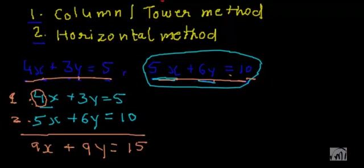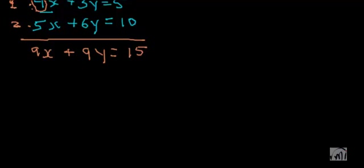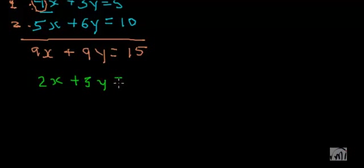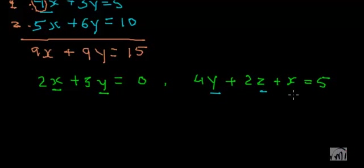Now let's take one more example. In this example let's have two equations. The first equation is 2x plus 3y equal to 0, and the second equation is 4y plus 2z plus x equal to 5. The first equation has only two variables — x and y — whereas the second equation has three variables: y, z, and x. The addition here is a bit tricky.